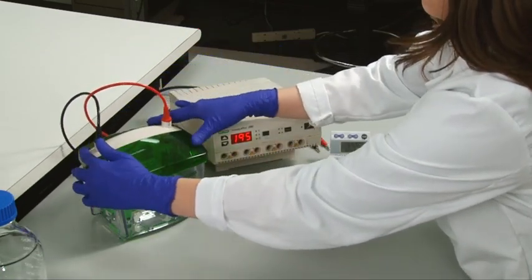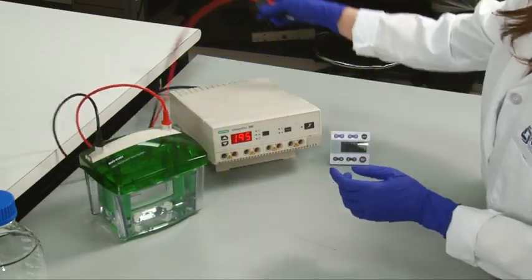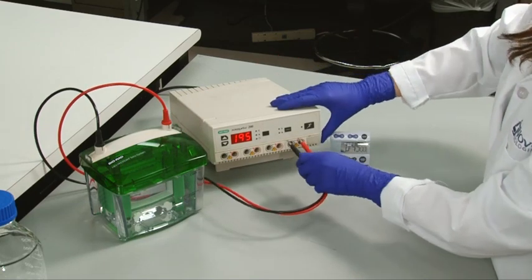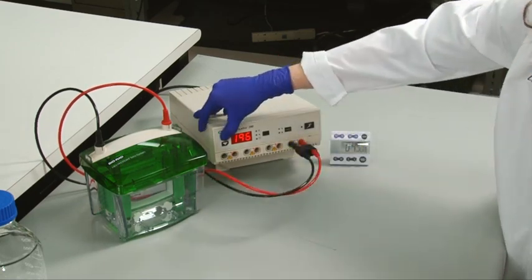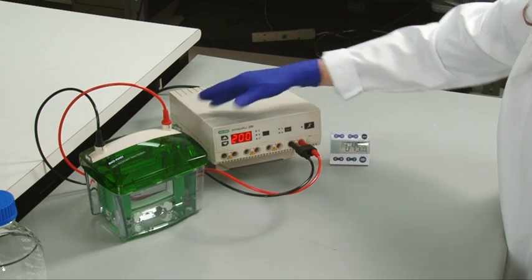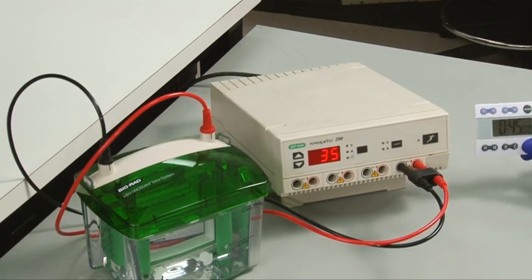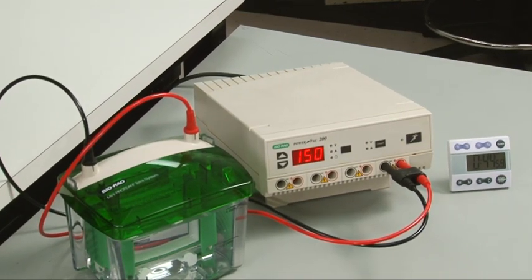Close the electrophoresis unit and connect it to a power supply. Most units typically run 45 to 60 minutes at 200 volts or until the loading buffer reaches the bottom of the gel. During this time, the negatively charged proteins in each sample will migrate towards the positively charged electrode, making their way through the polyacrylamide gel matrix.